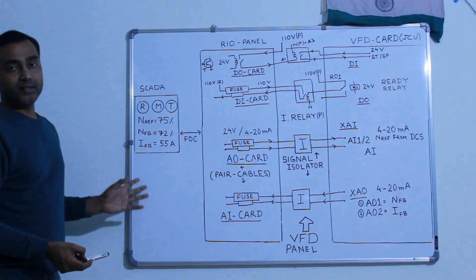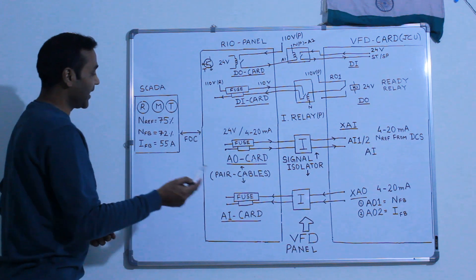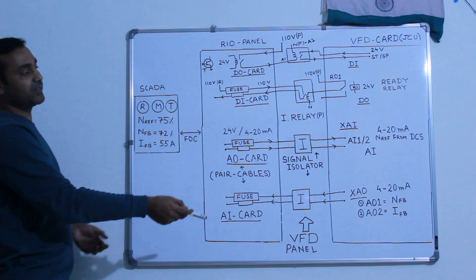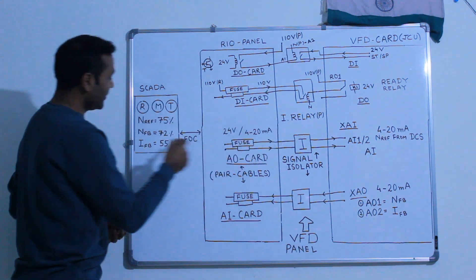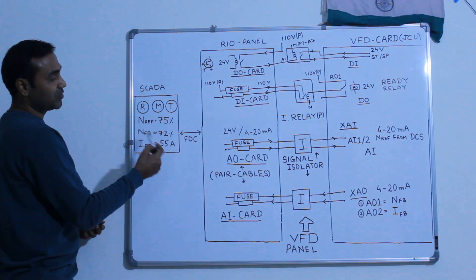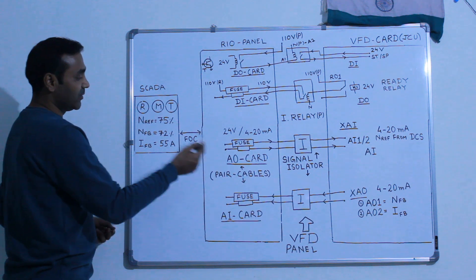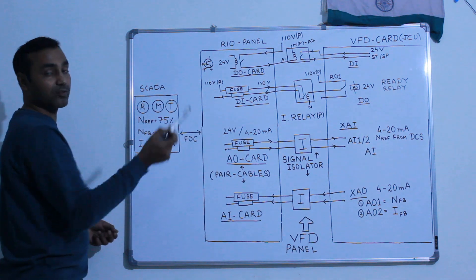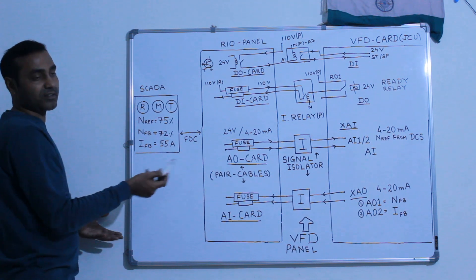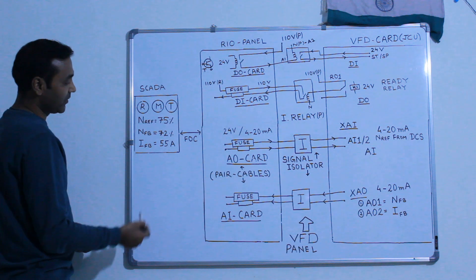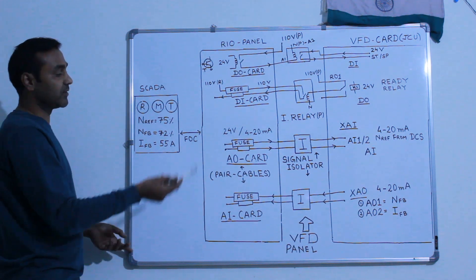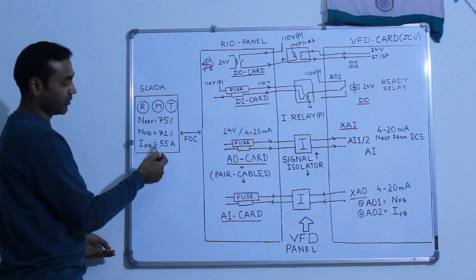If the operator is running that particular system manually, he will set a speed reference, for example we are taking 75%. Since the system is running, control room people will get two feedbacks - speed feedback, for example if the motor is given 75% but is not running at 75% because of load or unexpected issues, so 72% is coming. And current feedback - at how much current the VFD is trying to run that motor will also come back.